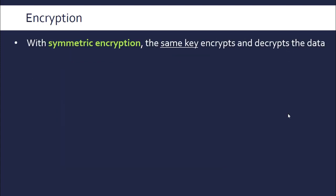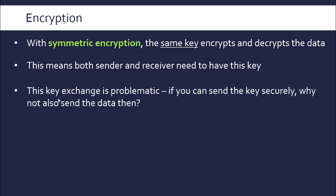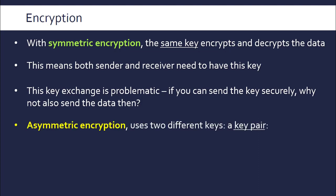To re-emphasise: with symmetric encryption, the same key encrypts and decrypts the data — that's the symmetry. This means both the sender and receiver need to have this key. This creates an issue because we have to actually exchange the key at some point, and we have to do this securely. If the key is sent over an open channel and intercepted, someone can later decrypt the data without authorisation. So we need the key sent securely, but if you can send securely, why not send the data securely too — which defeats the point of encryption. This is a bit of a paradox, which asymmetric encryption can fix by using two different keys: a key pair.